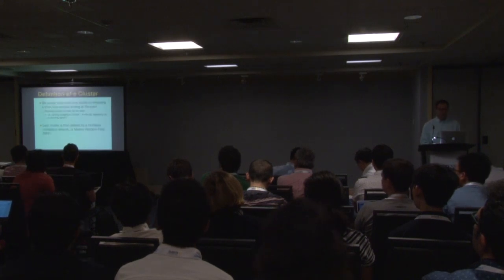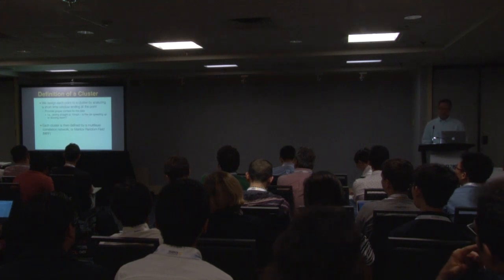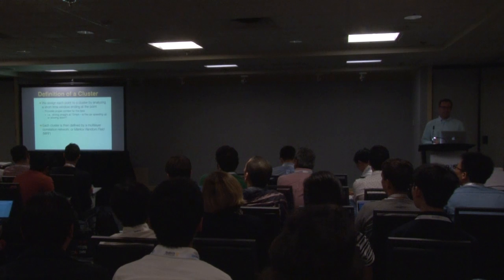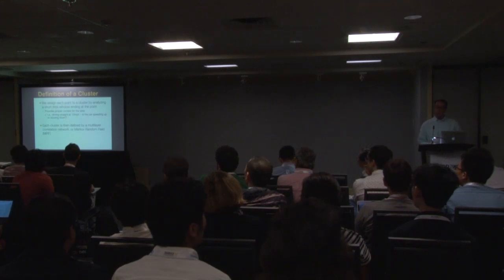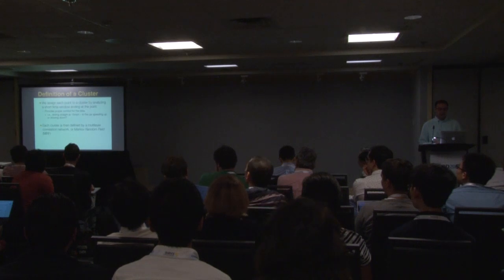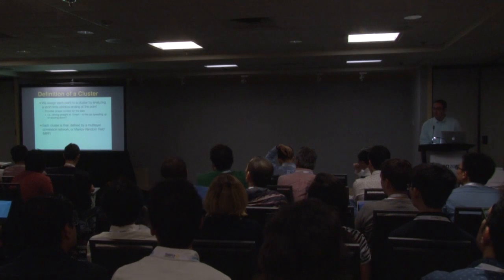How do we define these states or clusters? Instead of analyzing each point in isolation, we analyze and assign each point to a cluster by looking at a short window ending right at that point, because it provides real context for the data. In the case of automobiles, if the instantaneous state is driving straight at 15 miles an hour, this short window can provide context — am I speeding up to go on a highway, or am I slowing down because I'm at a red light? We define each cluster by a multi-layer correlation network showing the correlations between the different sensors at that point in time and over that window. This correlation network is also known as a Markov random field.